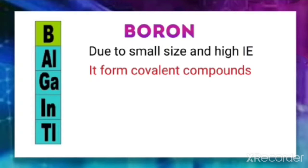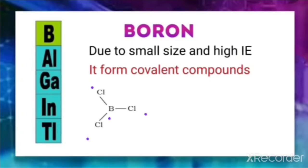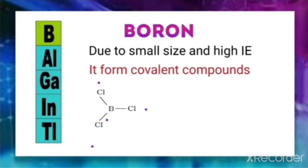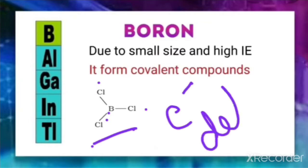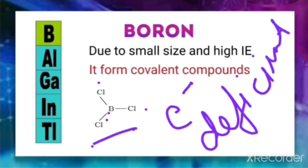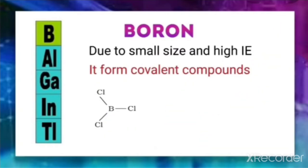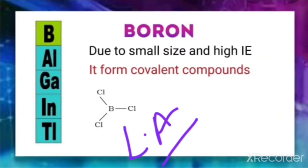For example, BCl₃ has only six electrons around the central element — two from each bond — so the central element does not satisfy the octet rule. This is a limitation of the octet rule, and such a molecule is called an electron deficient molecule. Being electron deficient, in order to achieve stability, it easily gains an electron pair, and therefore acts as a Lewis acid.